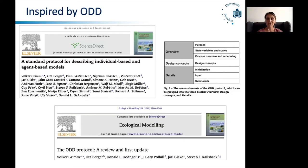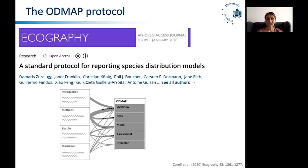There was also a review and a first update of that protocol after the first five years, and it already showed that it was quite successful in really structuring the information necessary for understanding these models. As a reviewer and editor, I was quite often frustrated that the information on species distribution models was distributed all over the place, all over the manuscripts when I was reading them.